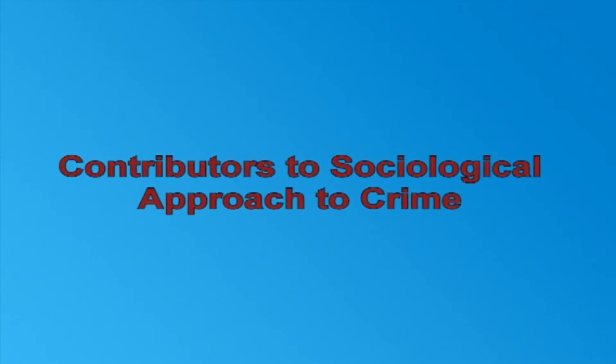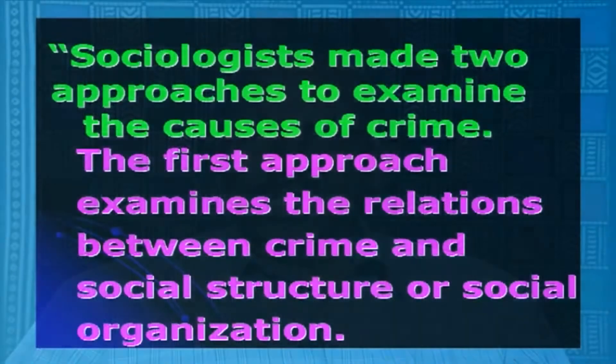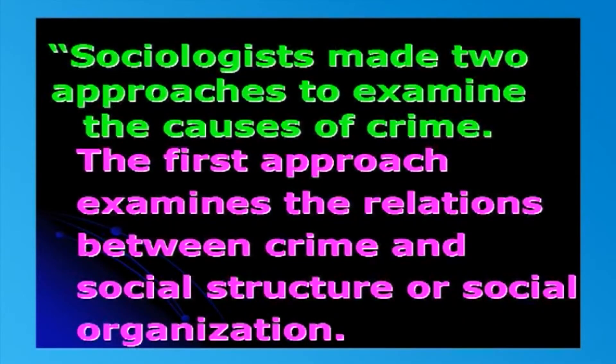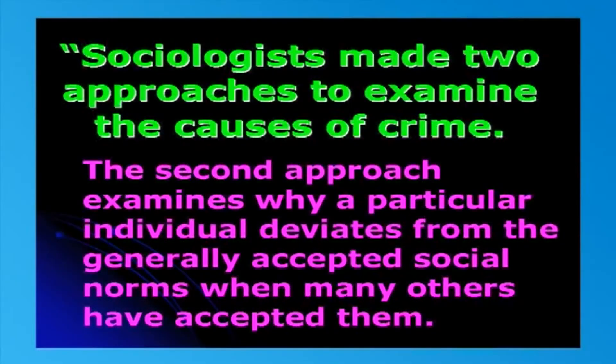Now we shall see the contributors to sociological approach to crime. We come across the contributions of many philosophers in this regard. We will look into the major contributions of philosophers of the 19th and 20th centuries and see how far the prevailing crime situation is in line with their contributions. Professor K. Chokalingam says sociologists made two approaches to examine the causes of crime. The first approach examines the relations between crime and social structure or social organization — that is, how crime is related to the social system. The second approach examines why a particular individual deviates from the generally accepted social norms when many others have accepted them.